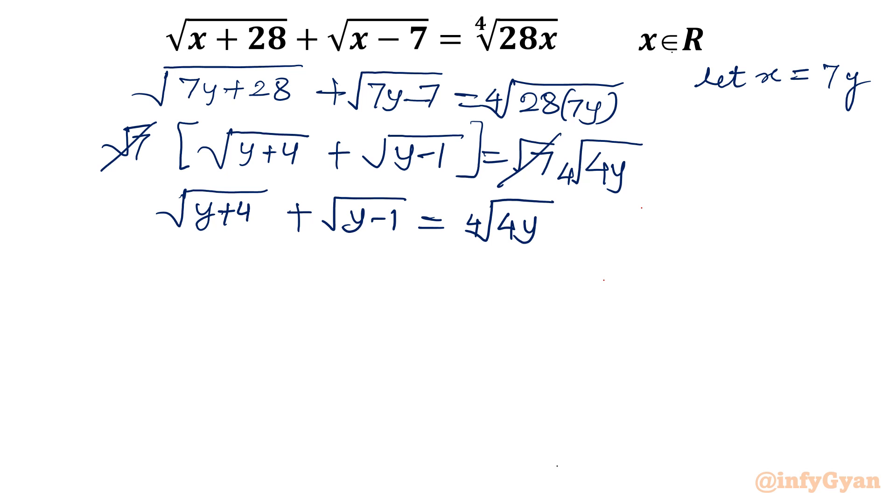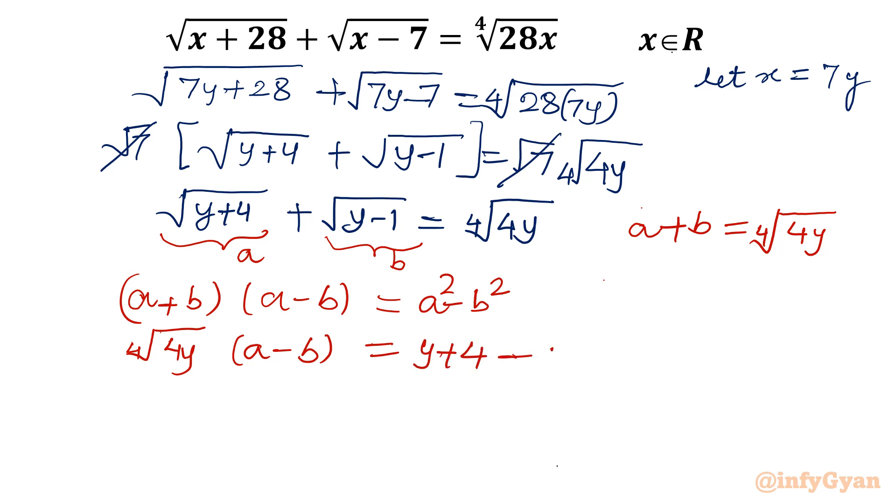Now I will give substitution. Let me consider the first one is a, second square root is b. That means a plus b equal to fourth root of 4y. Now I am going to use one algebraic identity: a plus b times a minus b equal to a square minus b square. I will put in place of a I will consider this one. So fourth root of 4y times a minus b equal to a square, which is y plus 4 minus b square, minus y minus 1. I can cancel y. What is left? 5.